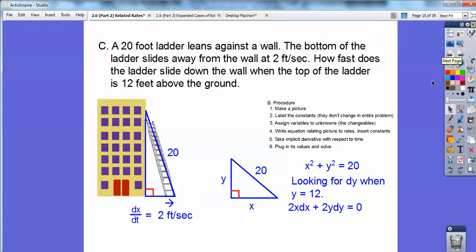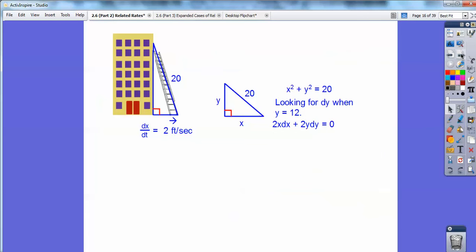And do I know x? Let's see. Yeah, that's going to be my 12. I'm sorry, when it's 12 feet above the ground, that's my y. So I'm going to have to figure out x by using Pythagorean Theorem with my 12 right there. So here, if I go ahead and plug in 12 and 20 and use the old Pythagorean Theorem, I get x to be 16.